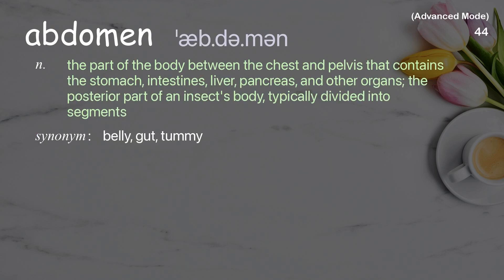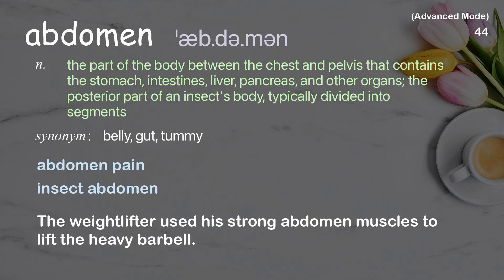Abdomen: the part of the body between the chest and pelvis that contains the stomach, intestines, liver, pancreas, and other organs; also, the posterior part of an insect's body, typically divided into segments. Examples: abdomen pain, insect abdomen. The weightlifter used his strong abdomen muscles to lift the heavy barbell.